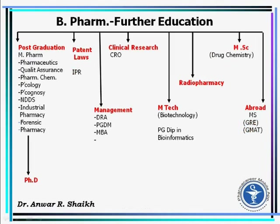If you want to continue further education after B-Pharm, there is a lot of scope. As a Post-Graduate, you can pursue M-Pharm in Pharmaceuticals, Quality Assurance, Pharma Chemistry, Pharmacology, Pharmacognosy, Drug Delivery Systems, and many more branches. After M-Pharm, you can opt for a PhD. You can also pursue Patent Law with an LLB after B-Pharm, or go into Management with an MBA or PGDM.